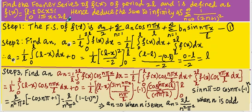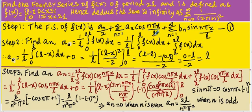Procedurally, we shall go step by step. Step 1 is to write the Fourier series expansion of f(x). The Fourier series expansion is a0/2 plus sigma n equals 1 to infinity of an·cos(nπx/L) plus sigma n equals 1 to infinity of bn·sin(nπx/L). Let this be equation number 1.